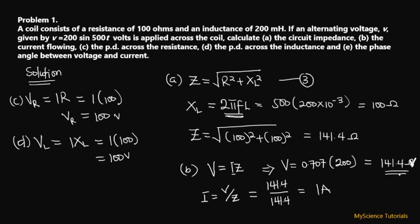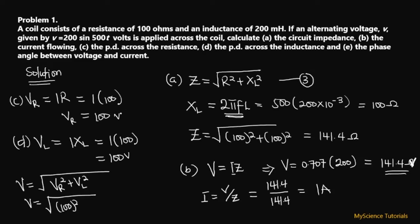We found our applied voltage to be 141.4 volts earlier. Let's do a quick cross-check: the applied voltage equals √(VR² + VL²) = √(100² + 100²) = √(10000 + 10000) = 141.4 volts. This matches what we found earlier.